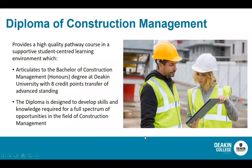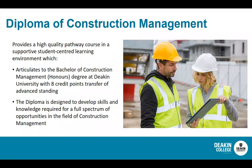The Diploma of Construction Management is equivalent to the first year of the bachelor degree, and it articulates into the second year of the Bachelor of Construction Management Honours degree at Deakin University. That degree is a four-year degree, so your first year would be in the diploma, followed by three years to finish the degree at the university. You progress across to the degree with eight credit points — the full first year of credit — as advanced standing. Our main objective in the diploma is to teach you the academic content you'll need, as well as develop the skills needed for university and for working in the construction management field.